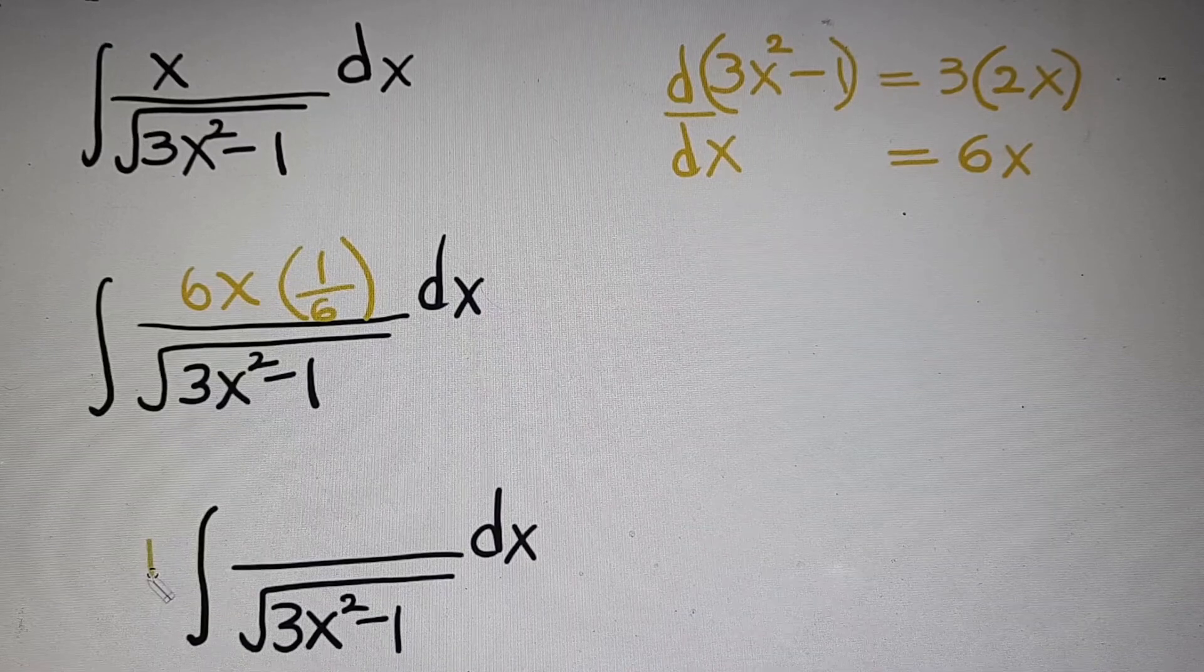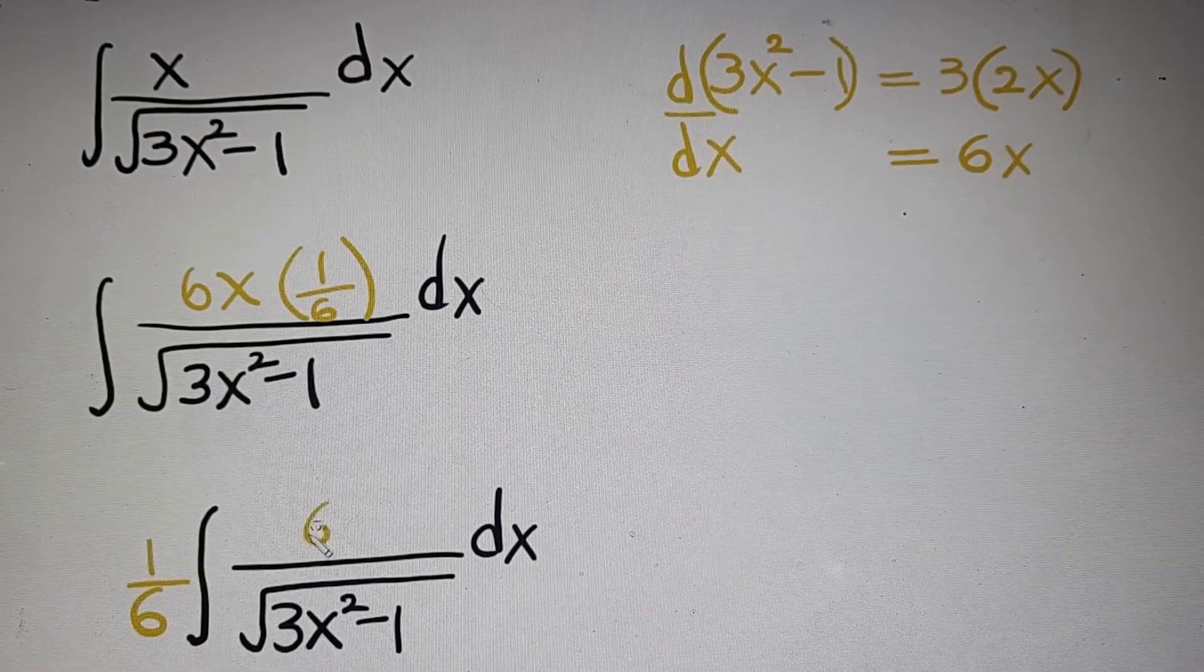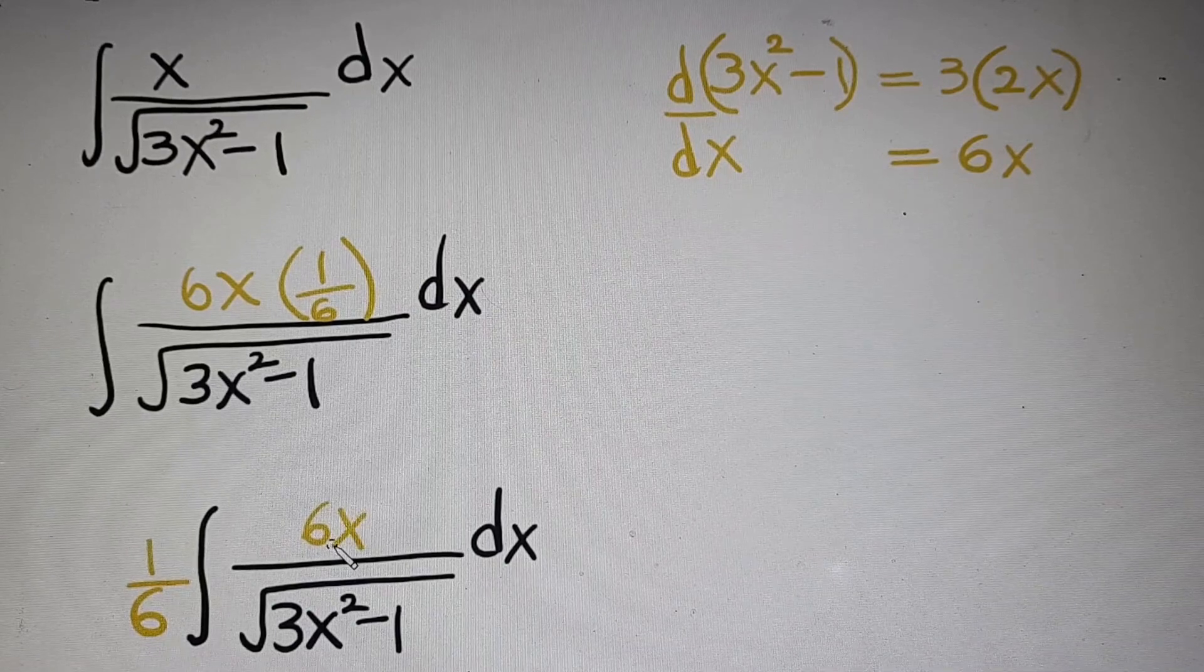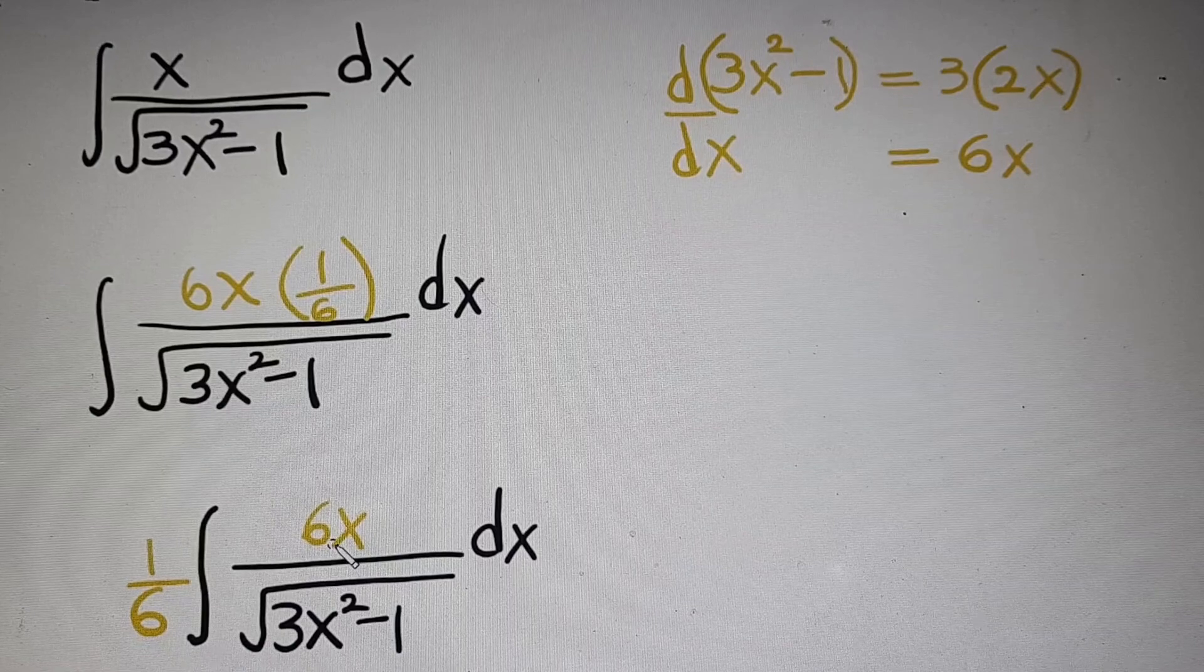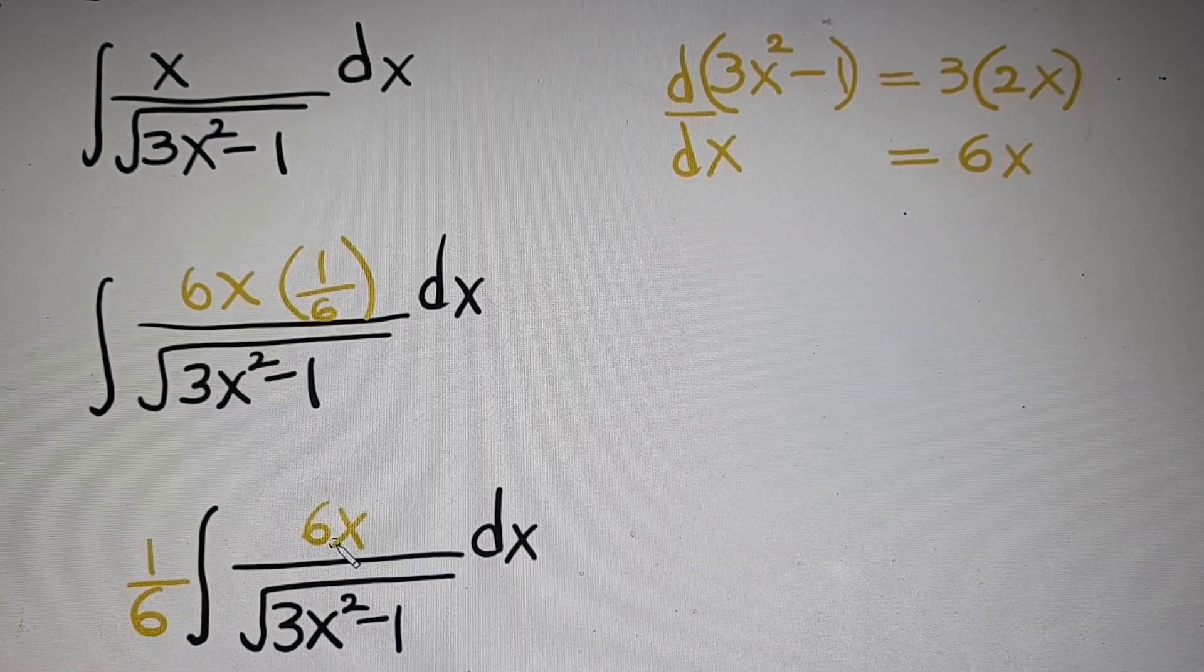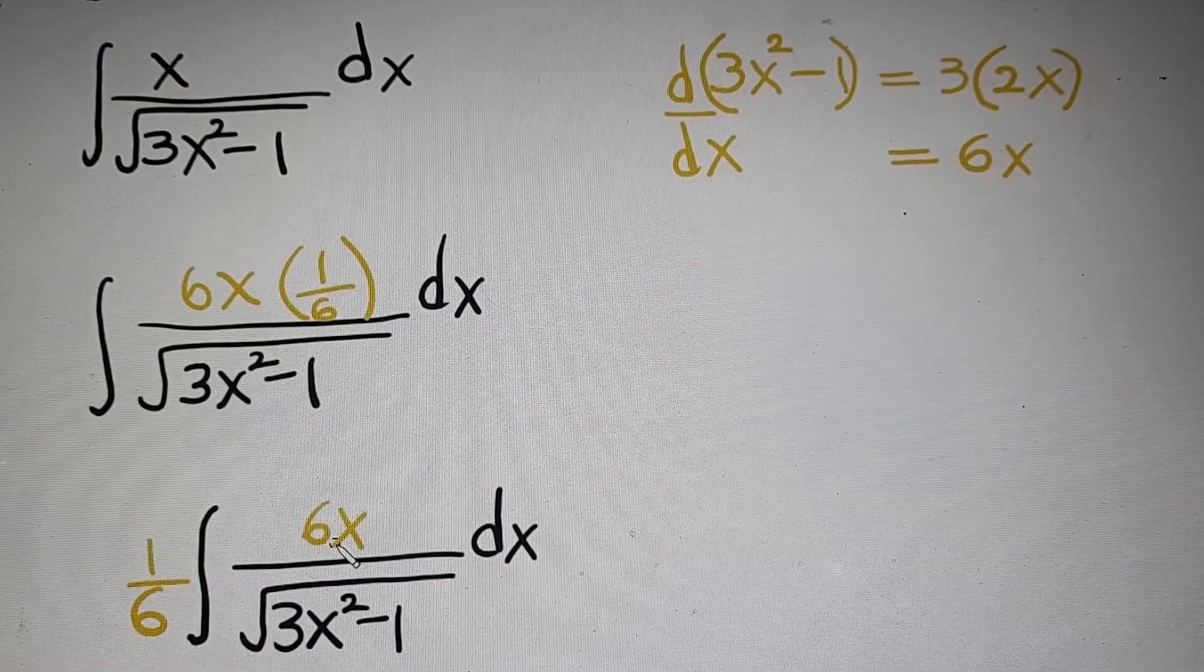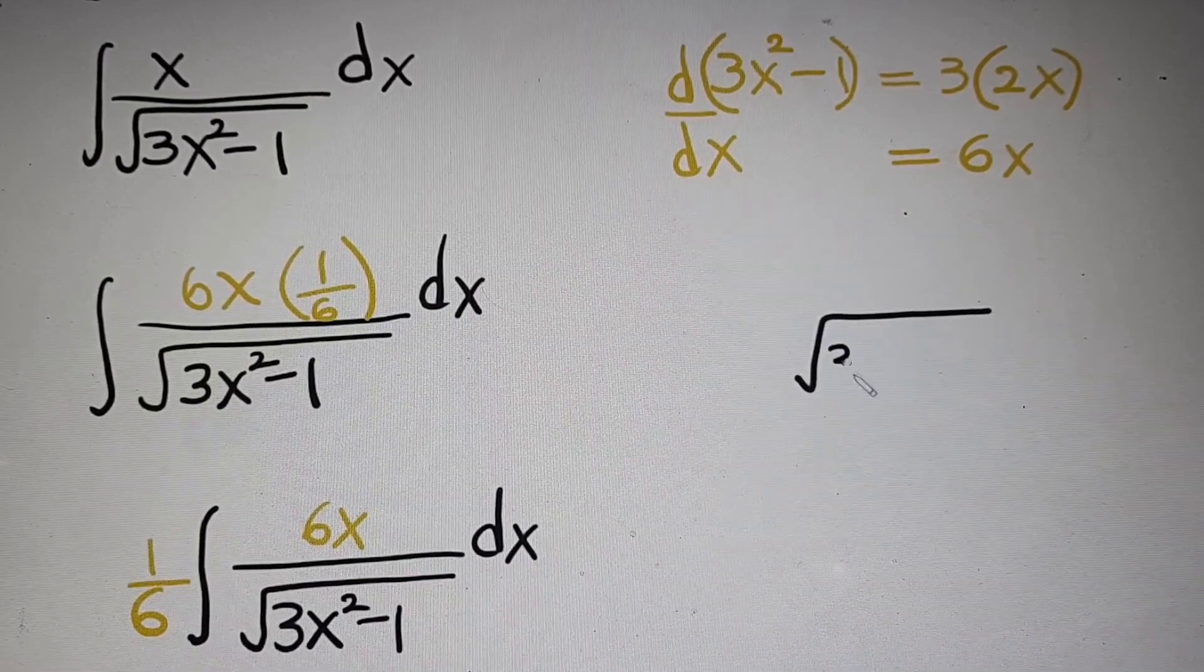And now, I'm gonna take 1 over 6 to the front of the integral sign. Now comes the theory. In the denominator, we have a function inside a square root, and its derivative on the numerator. If you ever get a situation like this, what you have to do is just write the denominator itself and multiply by 2.